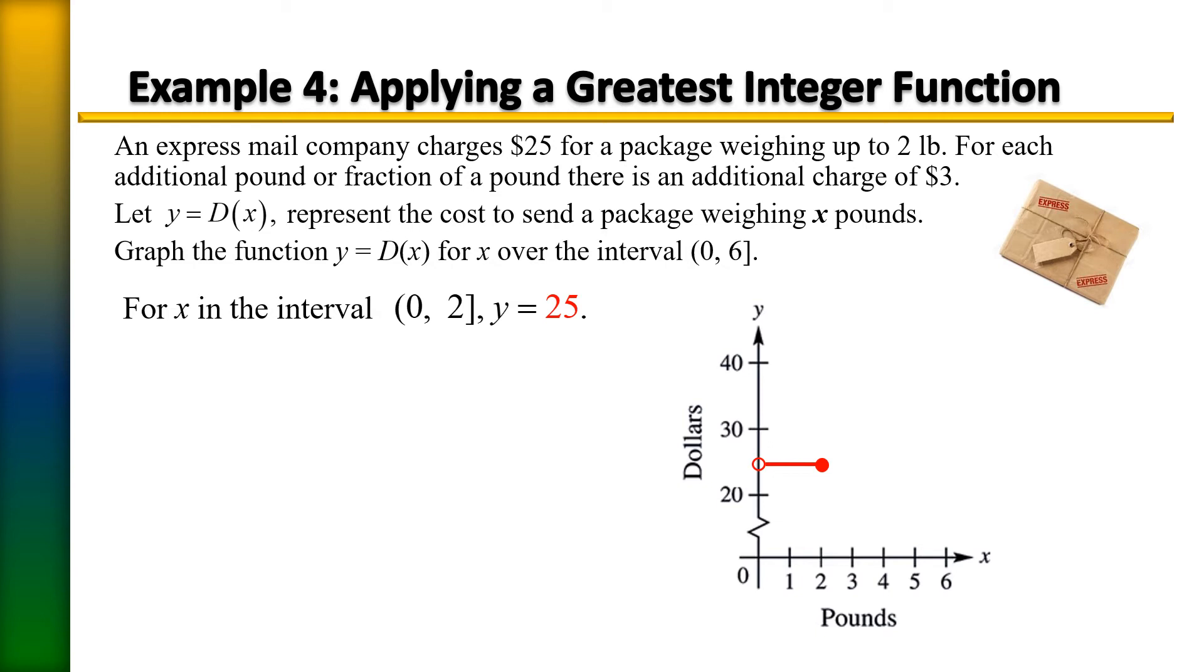So 25 plus 3, that's going to cost you $28. That's our next interval from 2 to 3 pounds. So we can go ahead and graph that. We're going to move our circle up to the 28 mark, which should be somewhere around here. And it's going to be from 2 to 3 because at that point you're going to pay the $28.